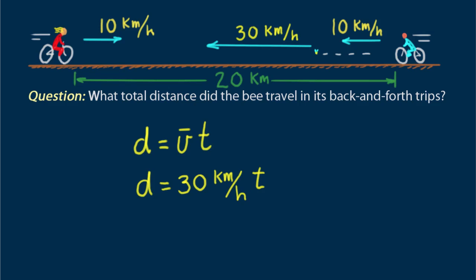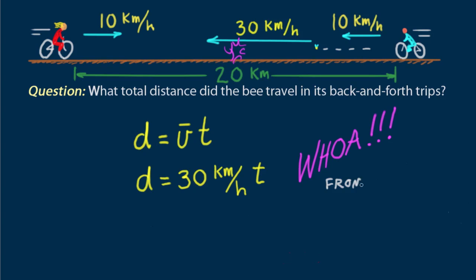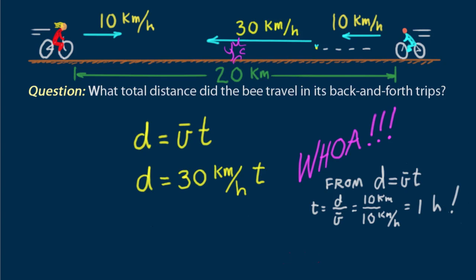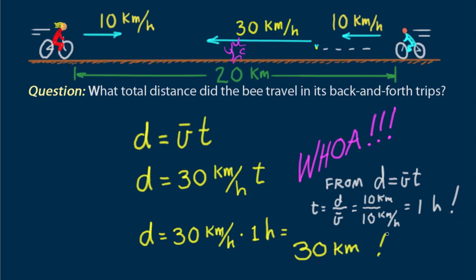A little thought will show that the time of travel for the bee is the same time that the bikes traveled 10 kilometers — the midpoint of their initial 20-kilometer separation. So each bike travels 10 kilometers. Common sense tells us that if you travel 10 kilometers at 10 kilometers per hour, it'll take one hour. Equations tell us the same thing. So, distance traveled by the bee is 30 kilometers per hour times one hour equals 30 kilometers. Solved!